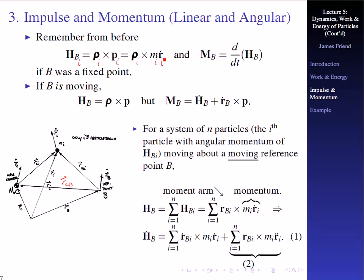For a system of n particles, the i-th particle has angular momentum H_Bi. The total angular momentum about moving reference point B is H_B = sum of H_Bi = sum of R_Bi cross M_i R_i-dot. Taking the time derivative of this, we get the summation of R_i-dot cross M_i R_i-dot plus the summation of R_Bi cross M_i R_i double-dot. We can expand R_Bi as R_BC plus R_Ci, and R_i-dot as R_C-dot plus R_Ci-dot. For the i-th particle, Newton's second law says M_i R_i double-dot equals F_i, so we replace that term accordingly.